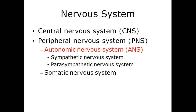The central nervous system and the peripheral nervous system comprise the nervous system. The peripheral nervous system is then subdivided into autonomic and somatic. The autonomic is then subdivided again into sympathetic and parasympathetic.